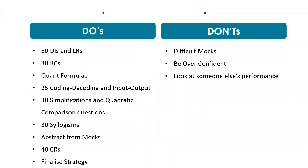These are the do's and don'ts that you can follow. Minimum solve 50 DI and LR sets. If you can do more then that will benefit you, but at least solve 50 sets. Along with it, solve 30 RCs. Go through all the formulas and shortcuts available in quants. You can refer to my video that I have made for CMAT quant revision. You can see the arithmetic and model maths part of it, as these are the two predominant sections of CET quants. I'll put the link of that video in the description.